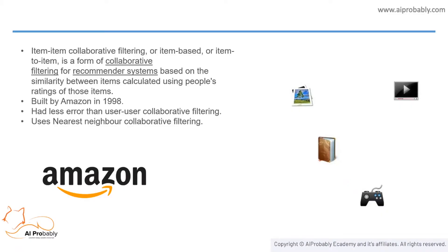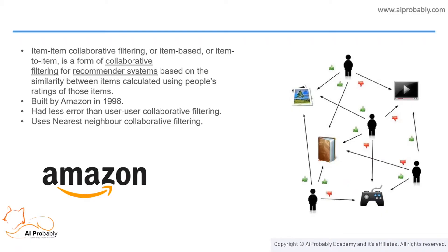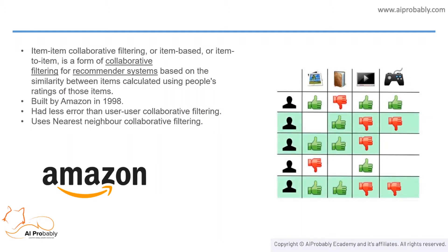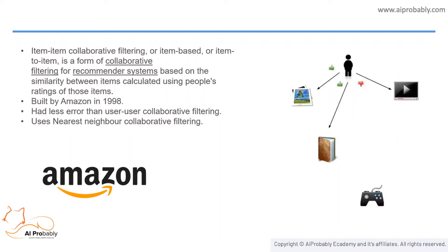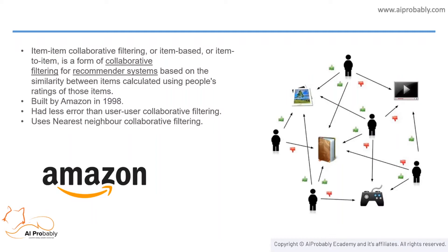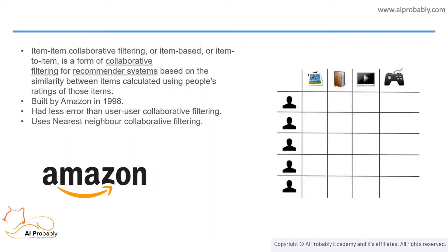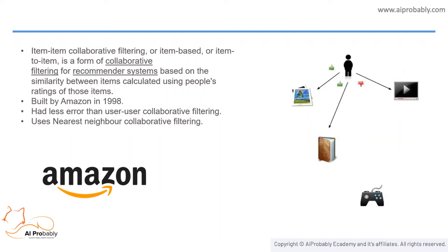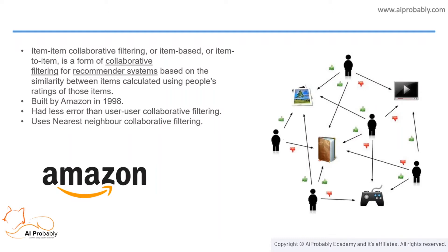Let's first look at item-based filtering. Item-based filtering is another way of collaborative-based filtering. In this we can see how a few people who like frames, books, laptops, and controllers are compared. We have to predict whether a person who liked frames and books but disliked the controller would like a laptop or not. By the collection of previous users who had similar choices, they didn't actually like a laptop, and hence the system wouldn't recommend a laptop to that person. This system was first built by Amazon in 1998, as they realized that this collaborative-based filtering had less error compared to user-user collaborative filtering, which uses a nearest neighbor collaborative filtering approach.